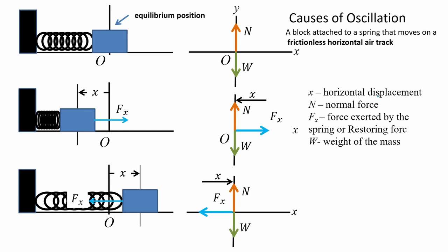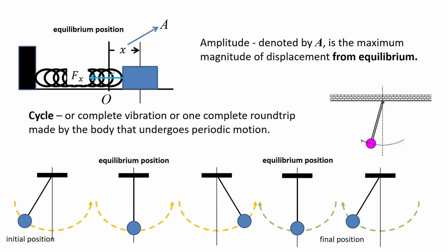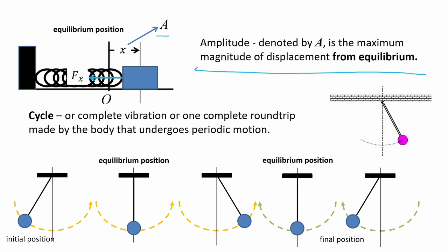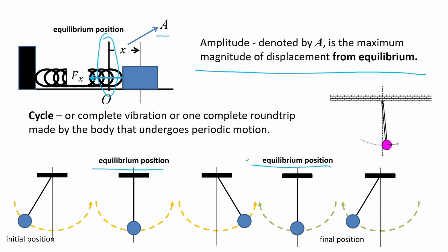Let us examine some forces that cause oscillation. Here we have a block lying on a frictionless surface attached to a spring with spring constant K. The block is allowed to oscillate back and forth. The length X when the spring is expanded is called amplitude — it is the maximum magnitude of displacement from its equilibrium. On a frictionless surface, this X will move back and forth from the equilibrium position.